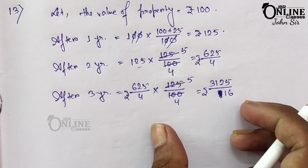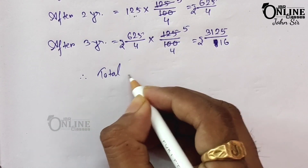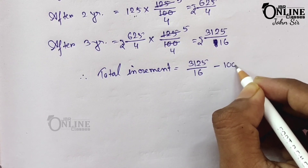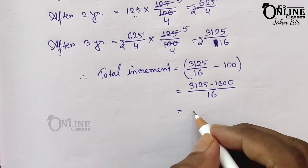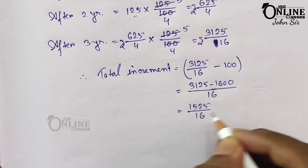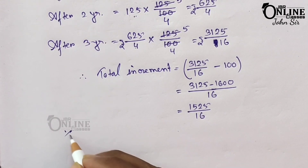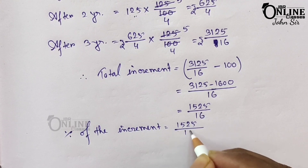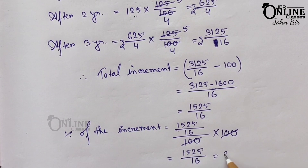Total increment = 3125/16 − 100 = (3125 − 1600)/16 = 1525/16. The percentage increment = (1525/16) ÷ 100 × 100 = 1525/16 = 95 and 5/16 percent as your answer.